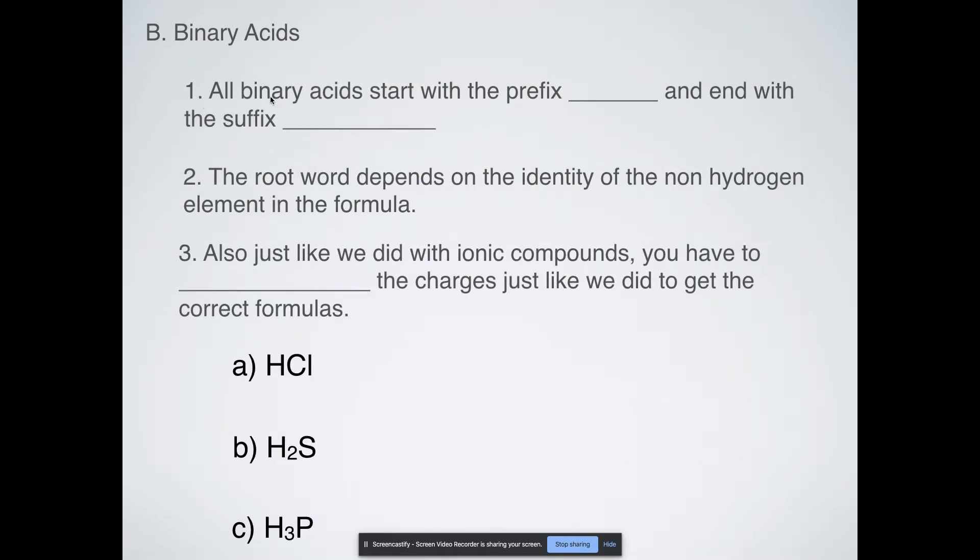How do you name a binary acid? All binary acids start with the prefix hydro. That's why it's hydrochloric acid. All binary acids that contain only two elements have to start with hydro. And then they always end in -ic acid.